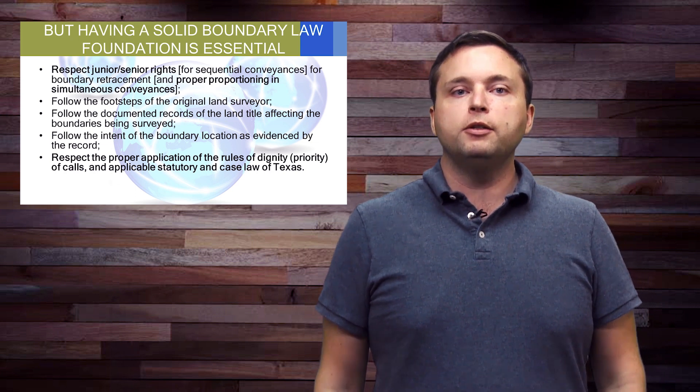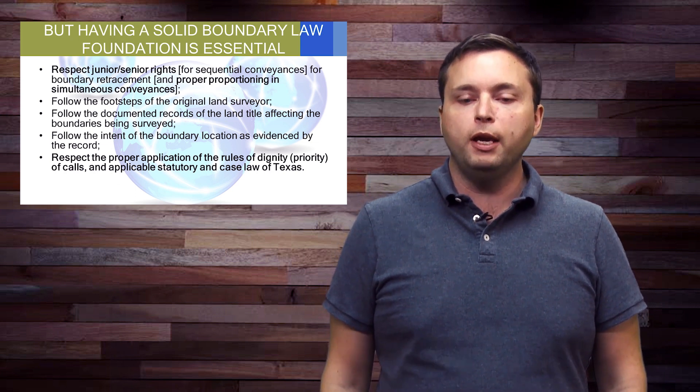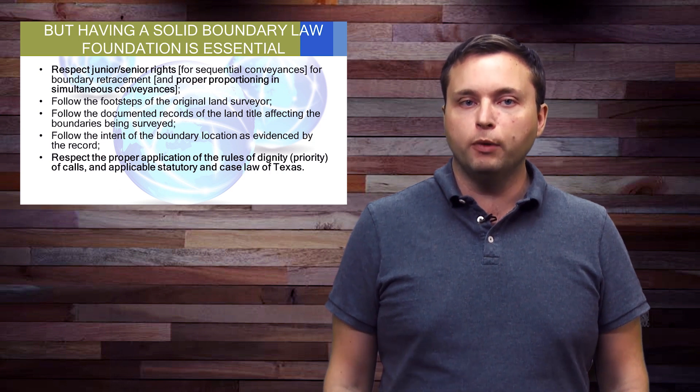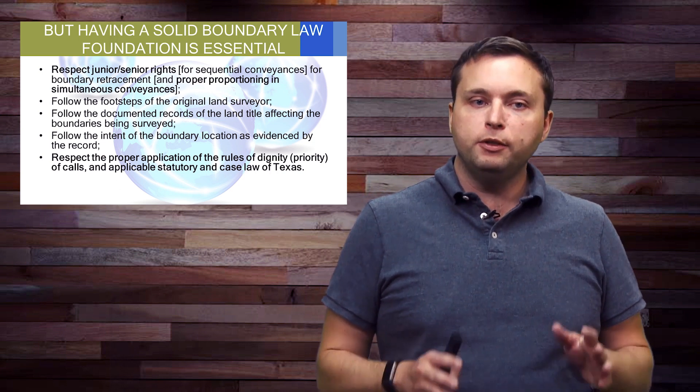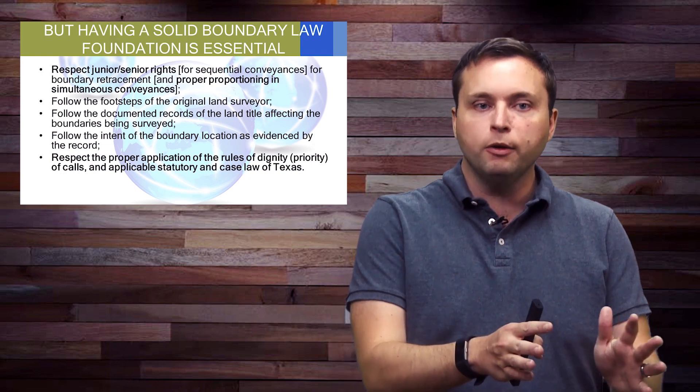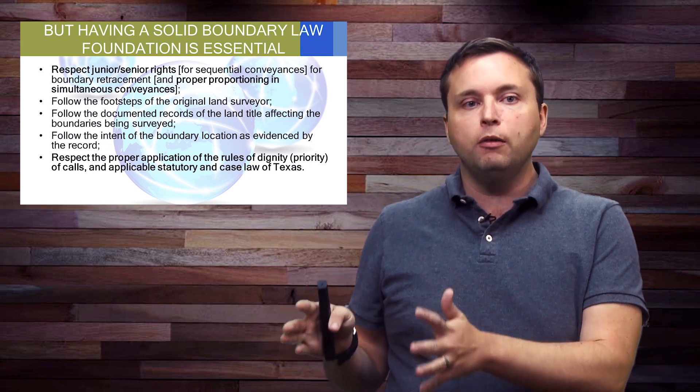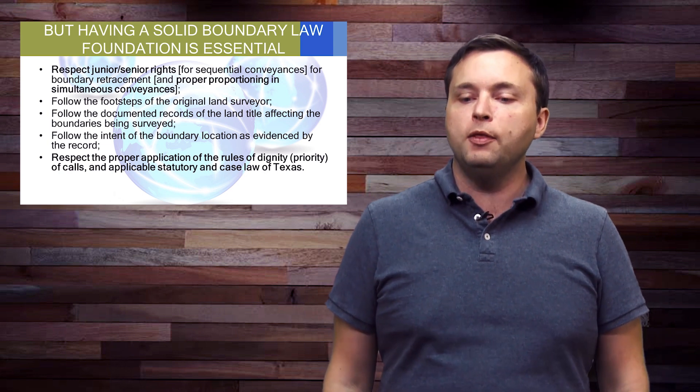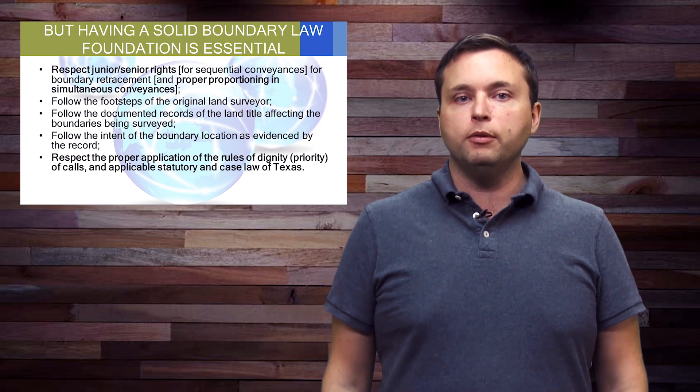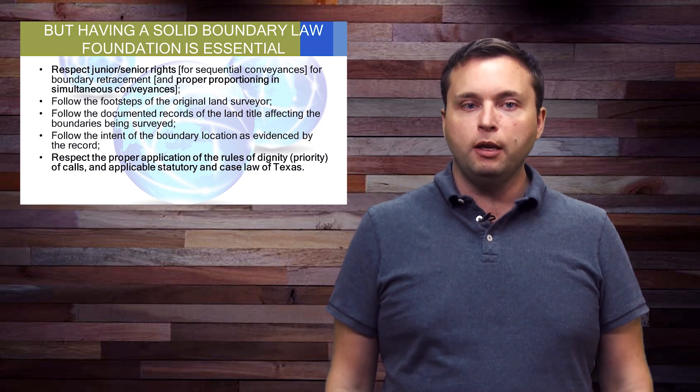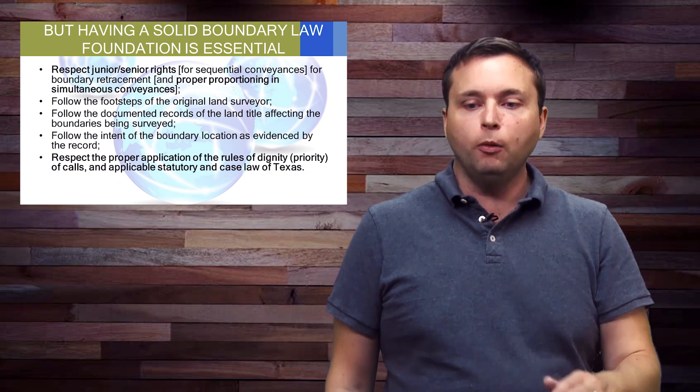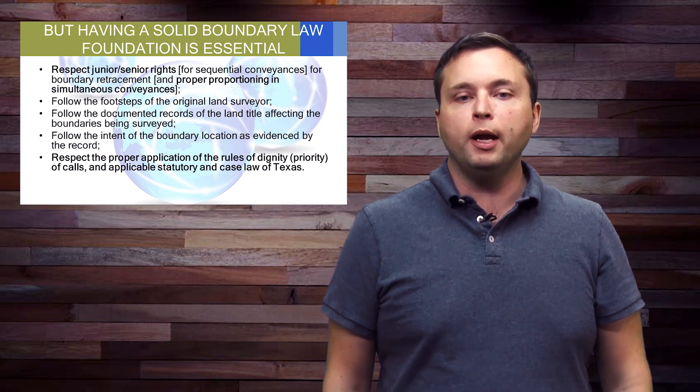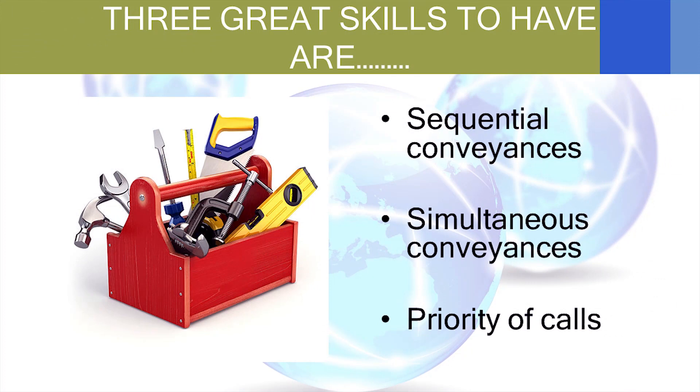Fourth, follow the intent of the boundary location as evidenced by the record. That means you don't follow the intent of the person who hired you. You follow the intent of the deeds, the easements, and the legal descriptions and the surveys. And then fourth, respect the priority of calls. And that is basically your hierarchy of evidence. So all of this is important. But what I want to focus on today is going to be three things. Sequential conveyances, simultaneous conveyances, and priority of calls.